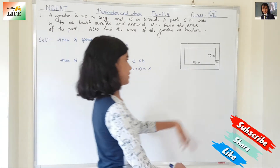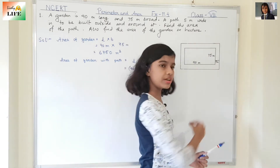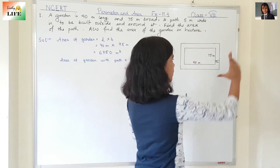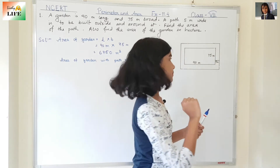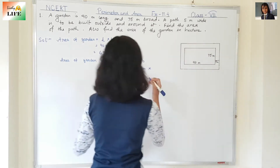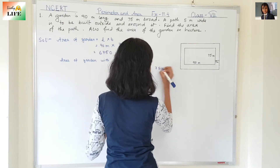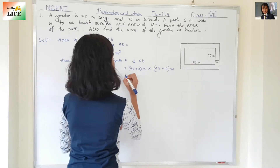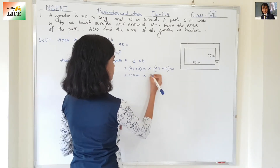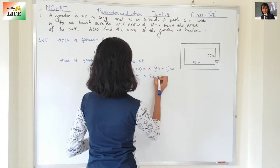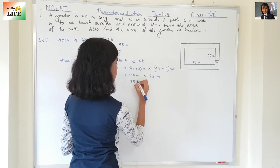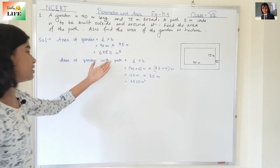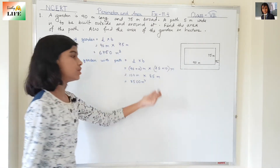For the breadth we do the same thing. It is 75 meter, and on each side it is also 5 meter. So 75 plus 5 plus 5: 5 plus 5 is 10, so 75 plus 10 meter. So 90 plus 10 is 100 and 75 plus 10 is 85. The area of the garden with path is 100 into 85, which is 8,500 meter square.